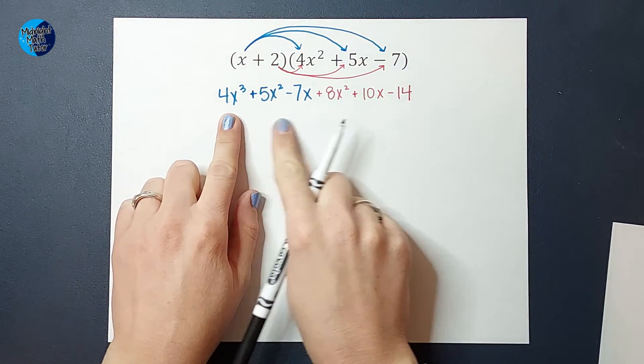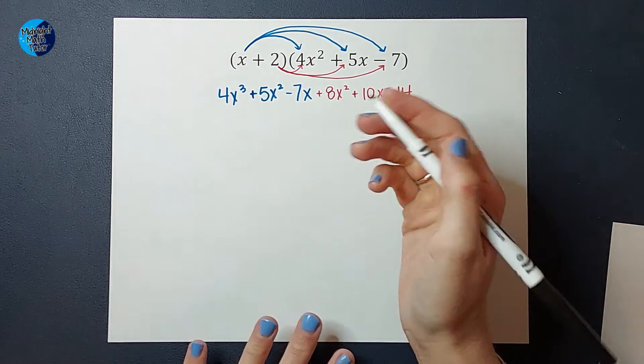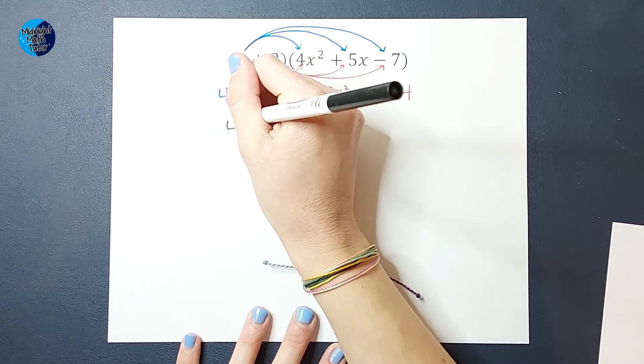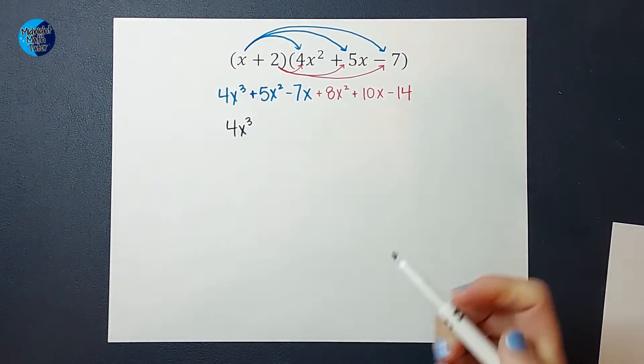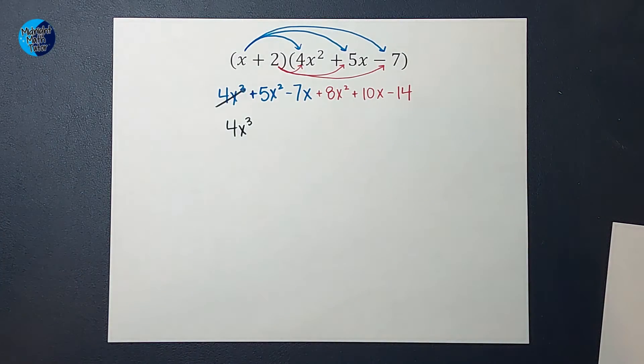So 4x cubed is a lonely guy. He doesn't have any friends. There's no other x cubes. So that's gonna stay 4x cubed.